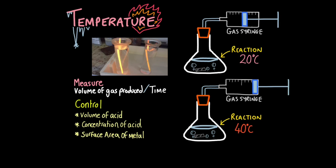Like with any experiment you must be clear on what you're measuring — the volume of gas produced over time — and you must keep all other things that could affect the rate of reaction constant. For example, the volume of acid, the concentration of acid (how many acid particles are dissolved in the liquid), and the surface area of the metal. We couldn't crush the metal into a powder because that would affect the rate of reaction too.